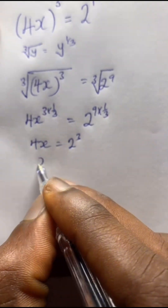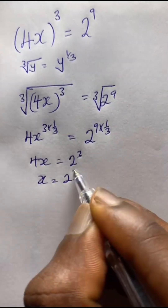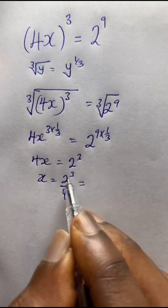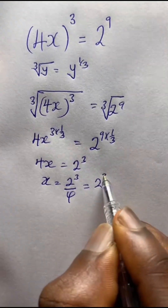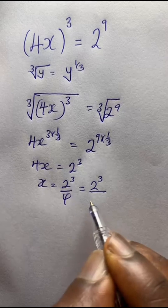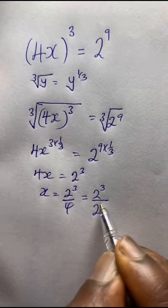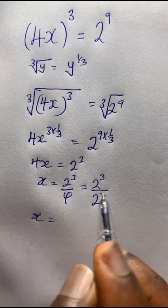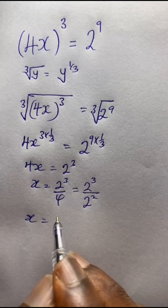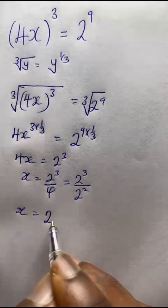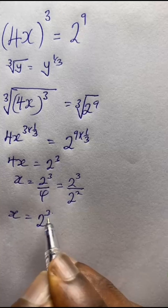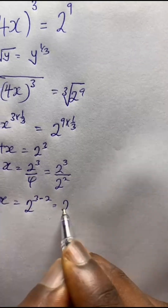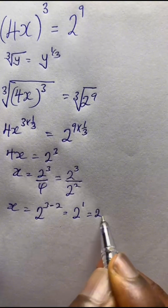Now solving for x: x equals 2 to the power of 3 divided by 4, which is 2 to the power of 3 over 2 to the power of 2. Using the indices division law — division means subtraction of exponents — that gives 2 to the power of 3 minus 2, which is 2 to the power of 1, which is simply 2.